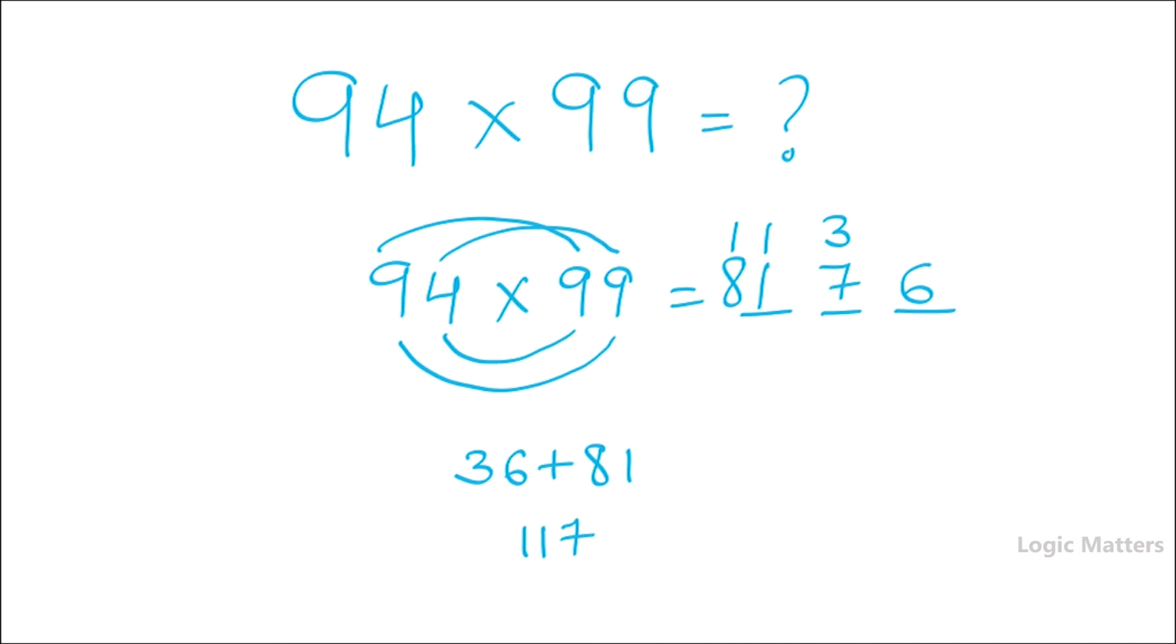So now add this total: 6, 7 plus 3 will give you an answer of 10. So write 0 here and carry forward 1. So 1 plus 1 plus 1 plus 1 is 3 and 8 plus 1 is 9. So the answer is 9306.